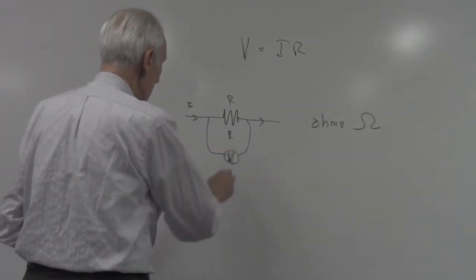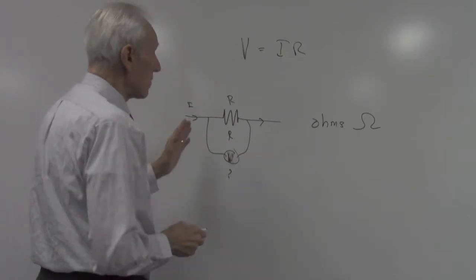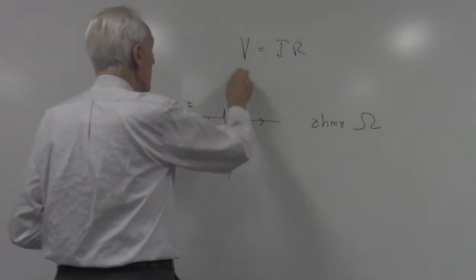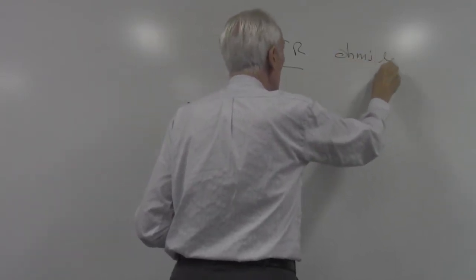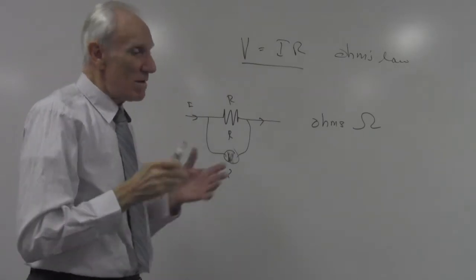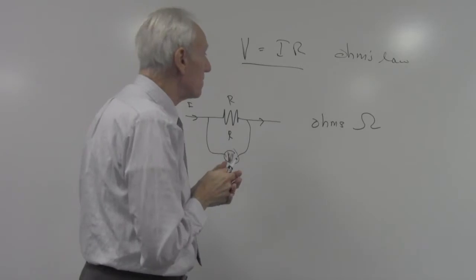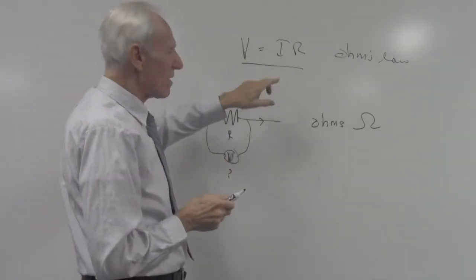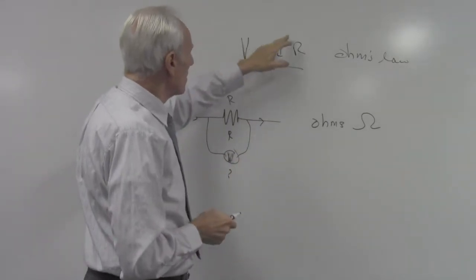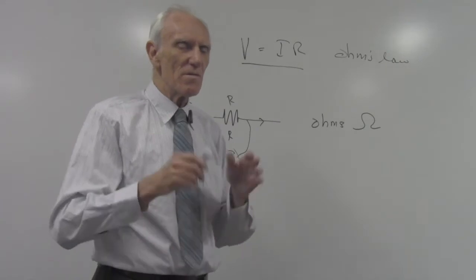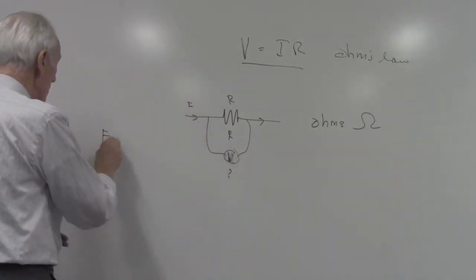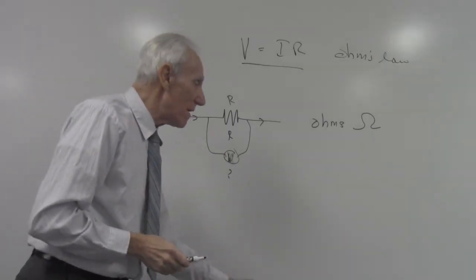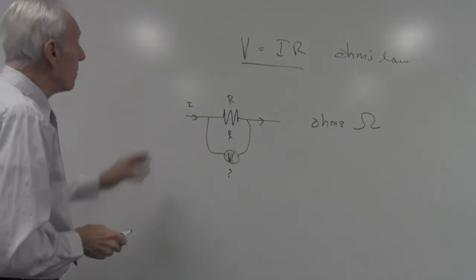If you hook a voltmeter across the resistor to measure the voltage, this is what's called a voltage drop. The current through it is I, resistance is R — this is Ohm's law. It couldn't be easier. This relationship couldn't be easier. We could have some fudge factor like pi or the square root of 12. This could be I squared and R to the fourth power. But no, it's a very simple linear relationship like F equals ma, p equals mv — all these very nice simple relationships we talked about last semester.